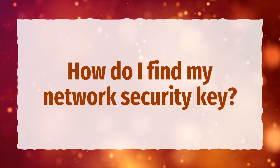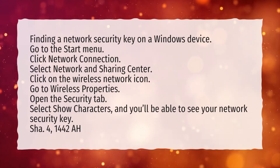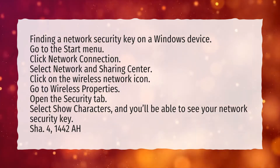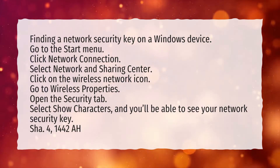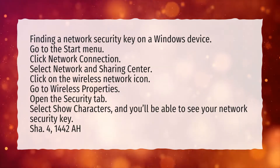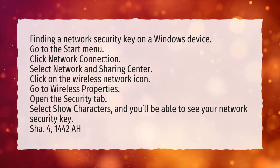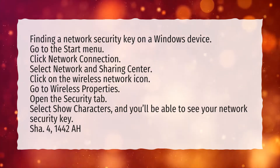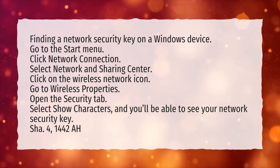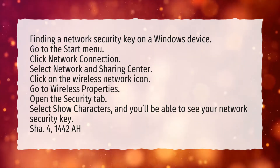How do I find my network security key? Finding a network security key on a Windows device: Go to the start menu, click Network Connection, select Network and Sharing Center, click on the wireless network icon, go to Wireless Properties, open the Security tab, select Show Characters, and you'll be able to see your network security key.